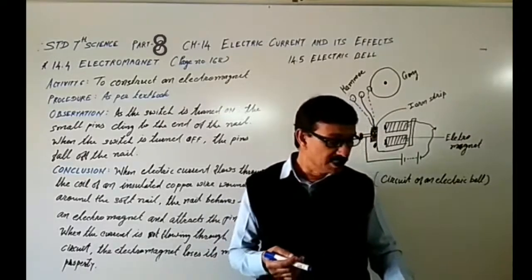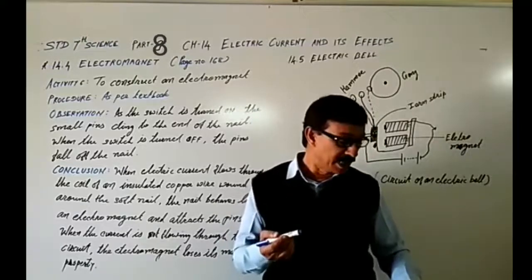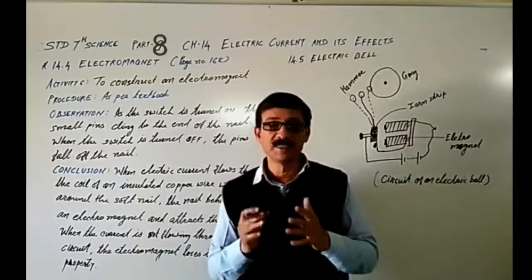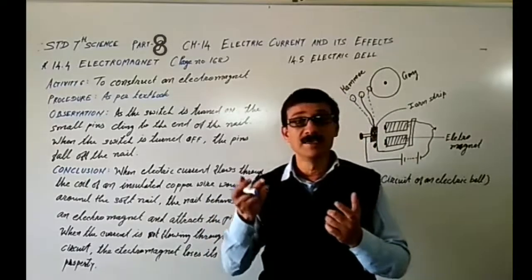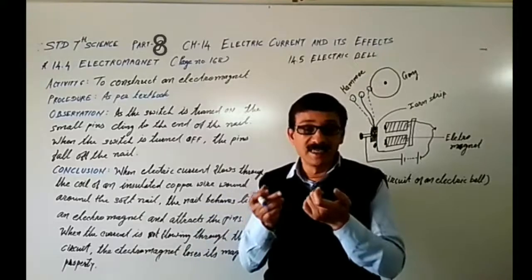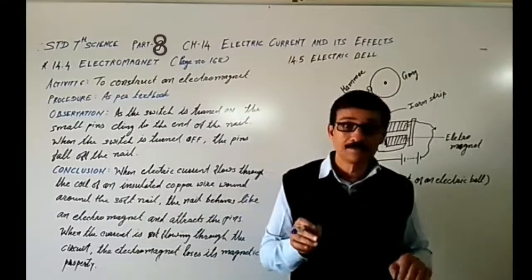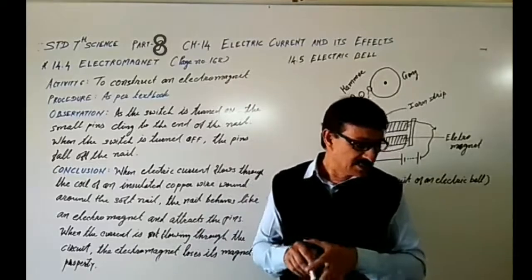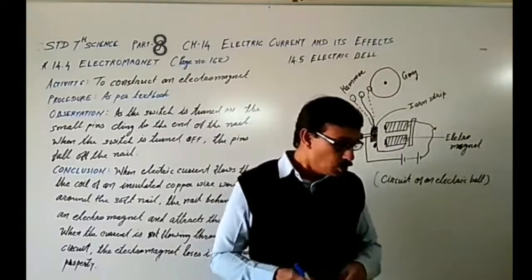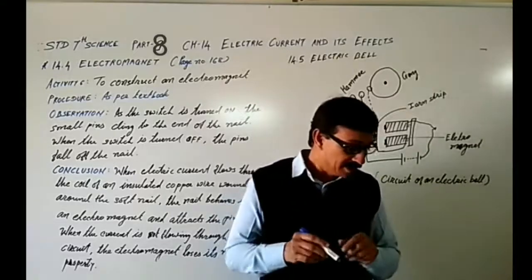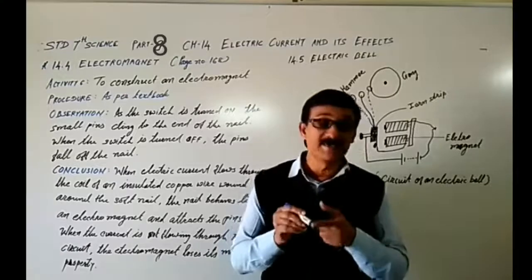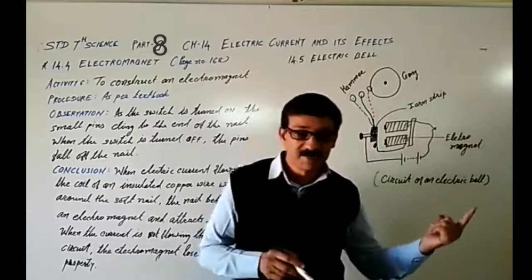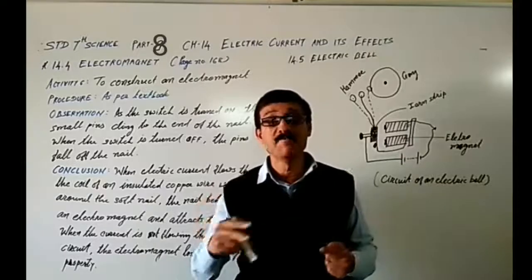He was the first person who noticed the deflection of a compass needle every time the current was passed through the wire. In the last part, we discussed an activity in which when current passes through a wire, we noticed a deflection in the compass needle. This is the magnetic effect of electric current. So first we came to know the heating effect, and second, the magnetic effect of the current.